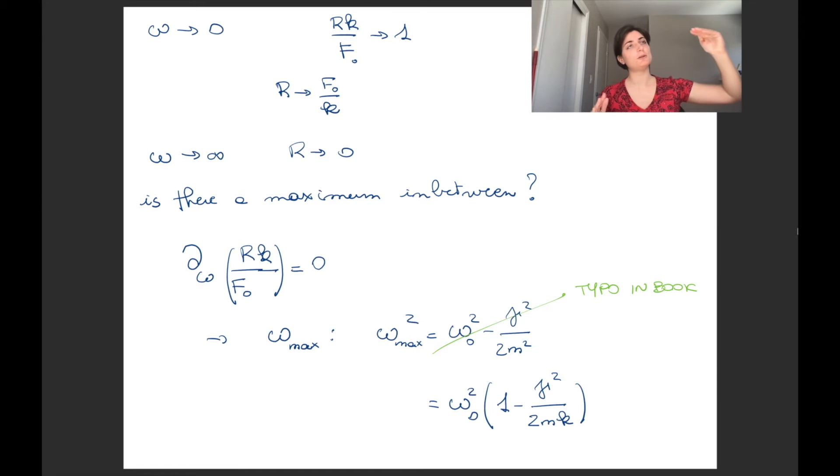Is there a maximum between these two values? So we have a value at omega equal to zero, we have a value at omega at infinity. Does R just tend from F0/k to zero, or does it have a maximum in between? What we have to compute is the derivative with respect to omega of Rk/F0 and set that equal to zero.